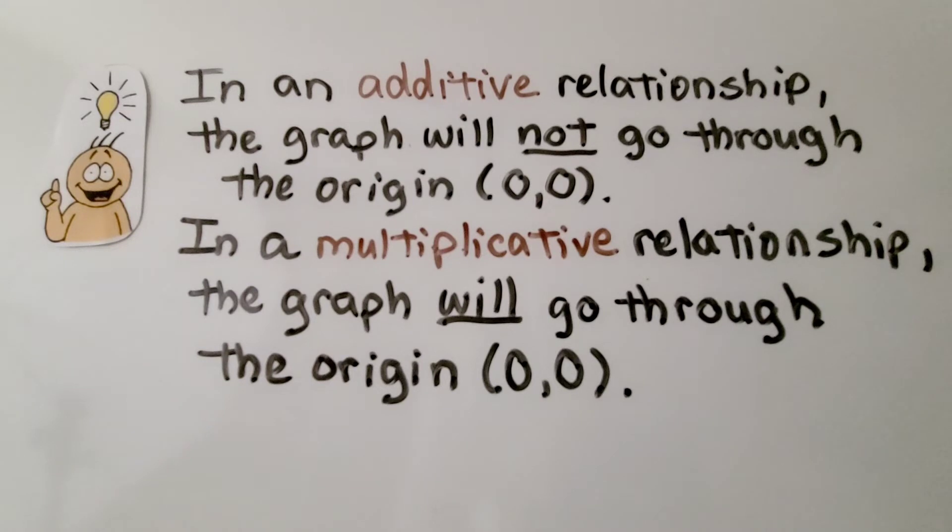In an additive relationship, the graph will not go through the origin 0, 0. In a multiplicative relationship, the graph will go through the origin 0, 0.